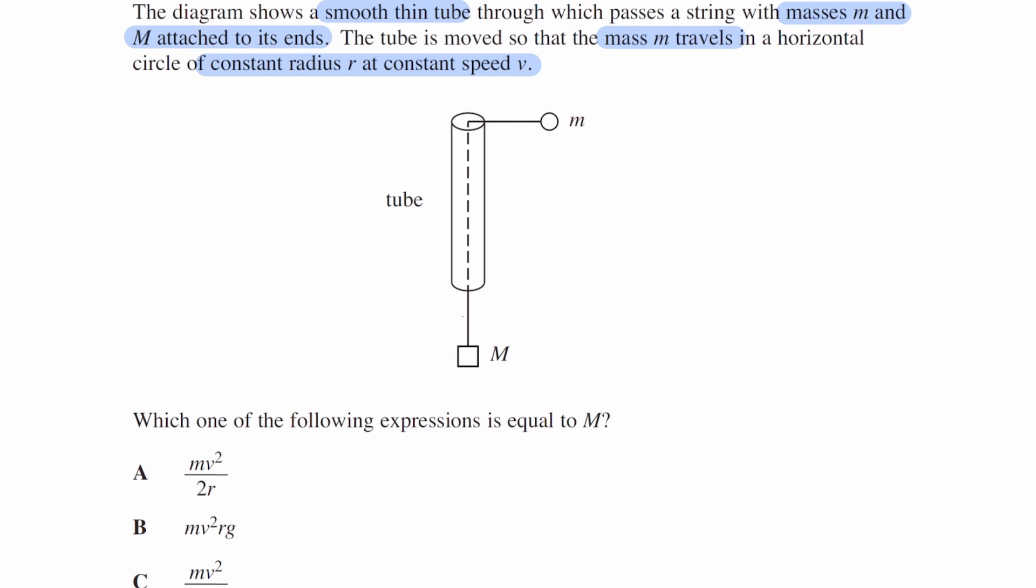For capital M, we have tension going upwards, let's call that T, and then we have weight, capital M-G, going down. For the mass that we have here, we have tension acting towards the left. That is the same tension that we have over here, because this is a smooth tube, so the tension will carry through all the way along the string. Both masses experience the same tension force.